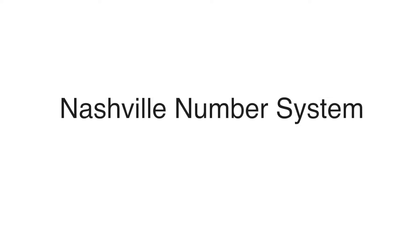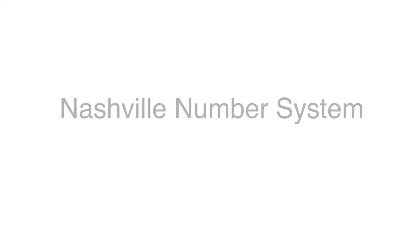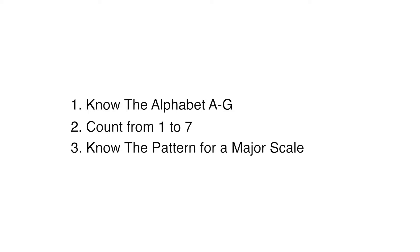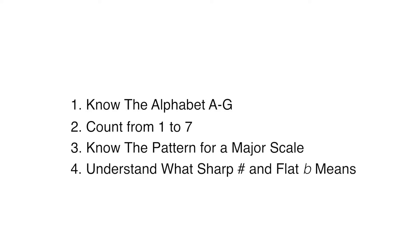In order to successfully use the Nashville numbers system, you will need to be able to do the following: number one, know the alphabet from A to G; two, count from one to seven; three, know the pattern for a major scale; and number four, understand what sharp and flat means. If you already know all of that, you are well on your way. And if you don't, we'll explain as we go.